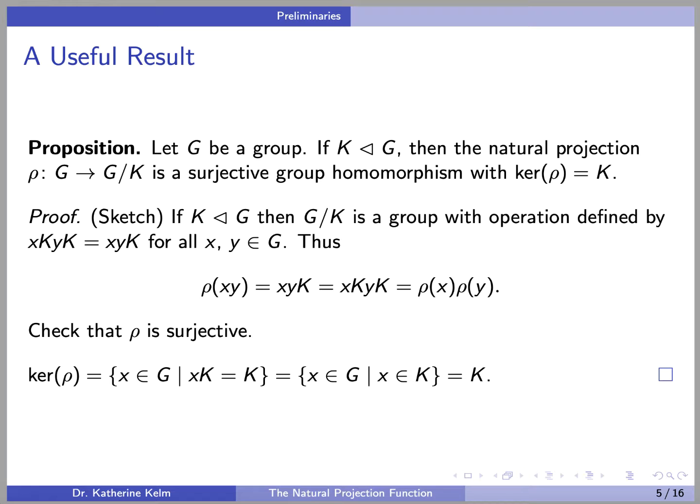You can easily check that rho is surjective. And if you follow the definition of the kernel, the kernel of rho is the set of all X's in G such that XK equals K — in other words, such that rho of X equals the identity in G mod K — which is precisely the elements of K.